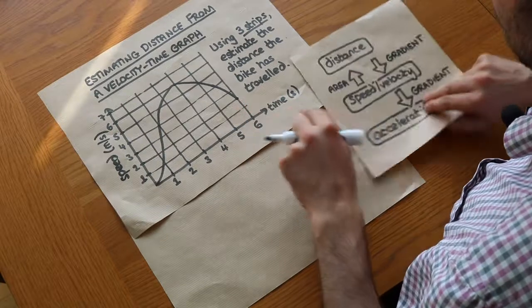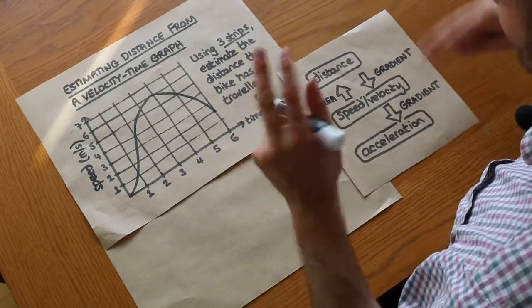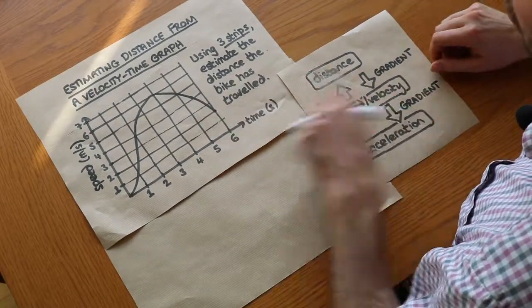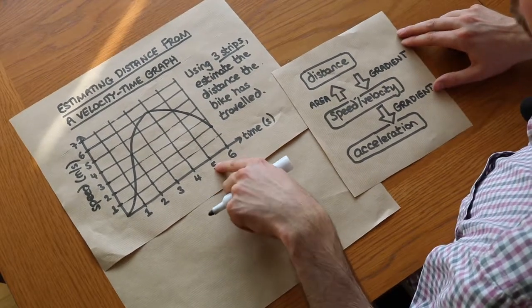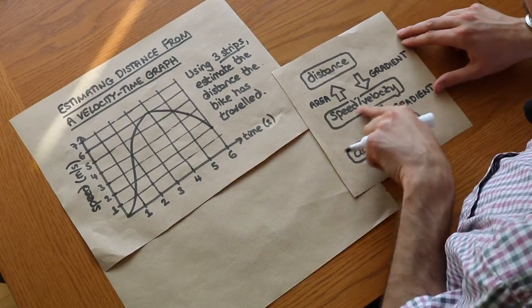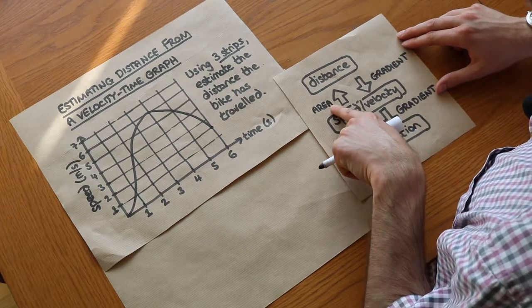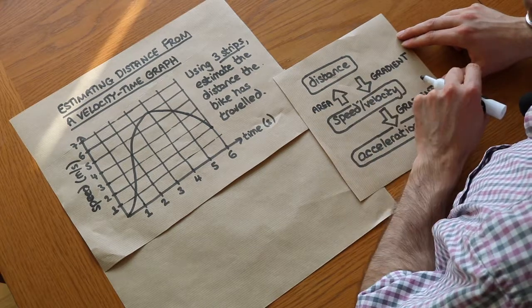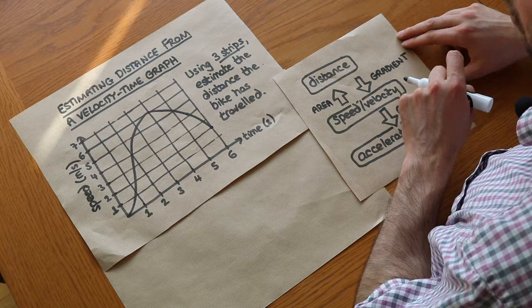And I've got this handy chart here which summarizes how we find distances and speeds and acceleration from different types of graph. We can see that if we have a speed or velocity time graph and we find the area under the graph, that gives us the distance traveled.